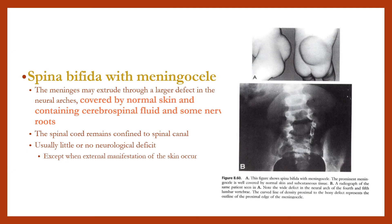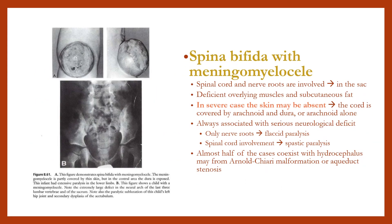Spina bifida with meningocele: the meninges may extrude through a larger defect in the neural arch, covered by normal skin and containing cerebrospinal fluid and some nerve roots. The spinal cord remains confined to the spinal canal, with usually little or no neurological deficit. In meningomyelocele, nerve roots and spinal cord are involved in the sac, with deficient overlying muscle and subcutaneous fat.